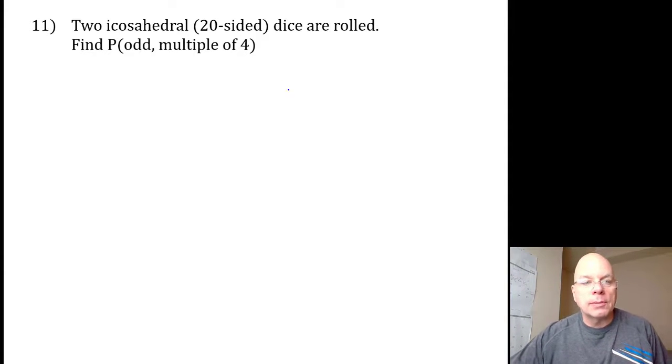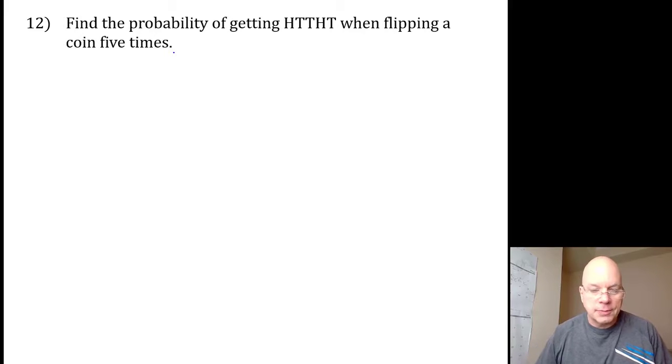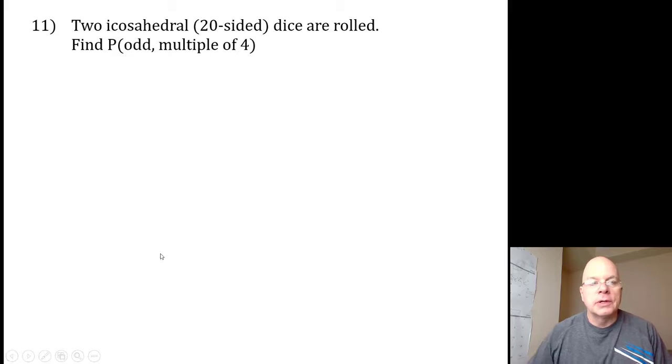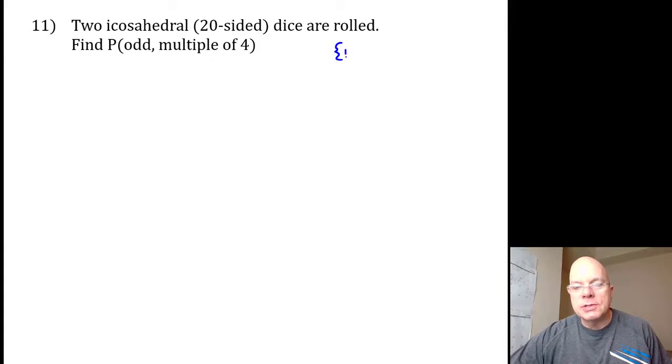Okay, here's a more straightforward problem. Two icosahedral 20-sided dice are rolled. I mean, you don't really need to have the picture on your notes; you just need to know the sample space is 1, 2, 3, 4... it's got every number up to